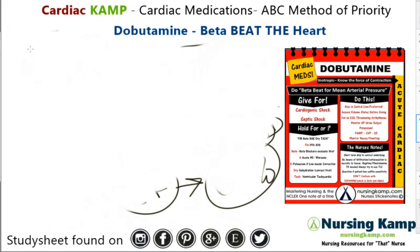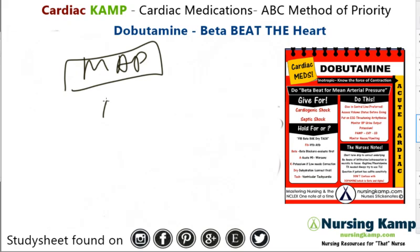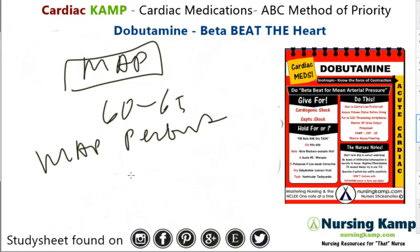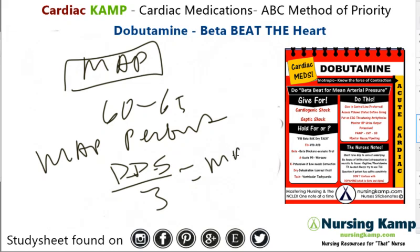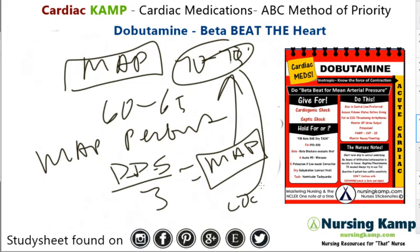They'll also be on a monitor. We're going to monitor their blood pressure for the mean arterial pressure, which needs to be greater than 60 to 65. We monitor MAP because that's about perfusion. Diastolic times two, plus systolic, divided by three gives you your mean arterial pressure. A brain requires 70 to 75 MAP, which is why level of consciousness is always an acute concern.